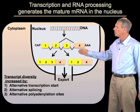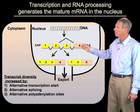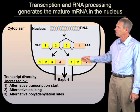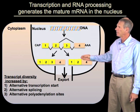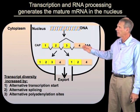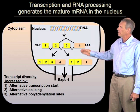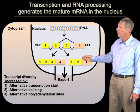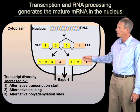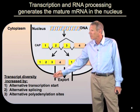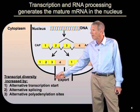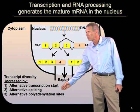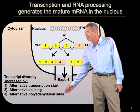mRNAs are produced in the nucleus by transcription, followed by RNA processing, which includes splicing and addition of a 3' poly A tail. One of the interesting features about eukaryotic mRNAs is that there can be a wide diversity of events which alter the form of the mRNA. We can have alternative transcription starts, alternative splicing, or alternative polyadenylation.